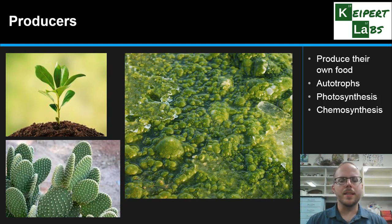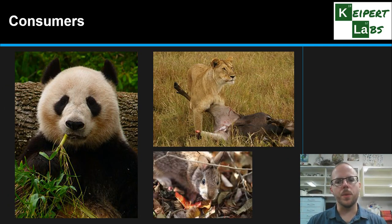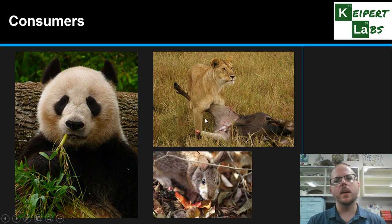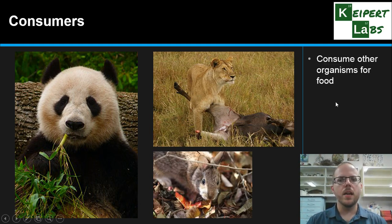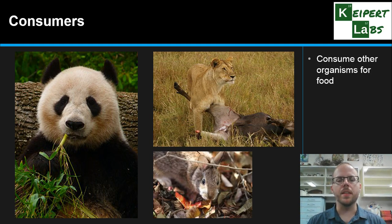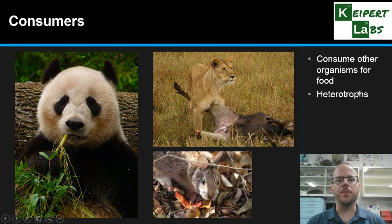Now let's look at consumers. We've got some examples here — a rabbit, a panda, and a lioness. A consumer needs to consume other organisms as a source of food or energy; they can't produce it themselves. So we use the term heterotroph. 'Hetero' meaning other or different, and 'troph' being feeding — so feeding on something else.